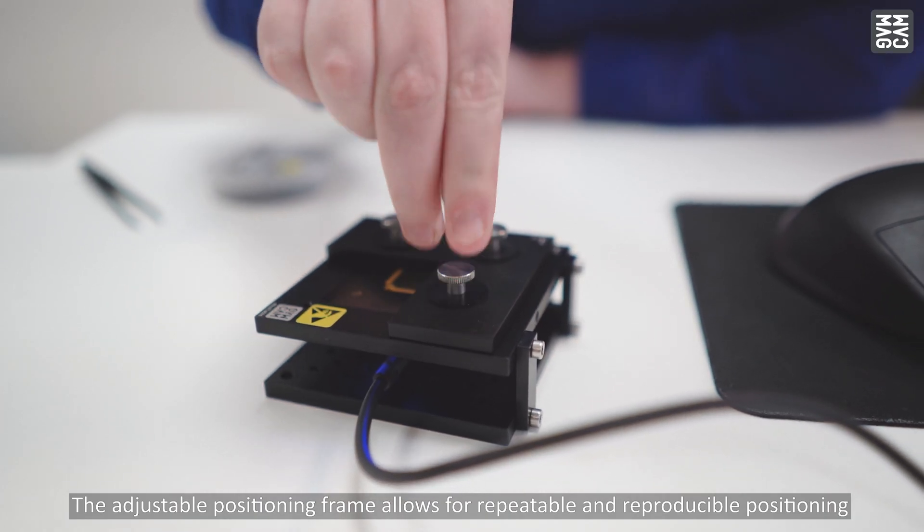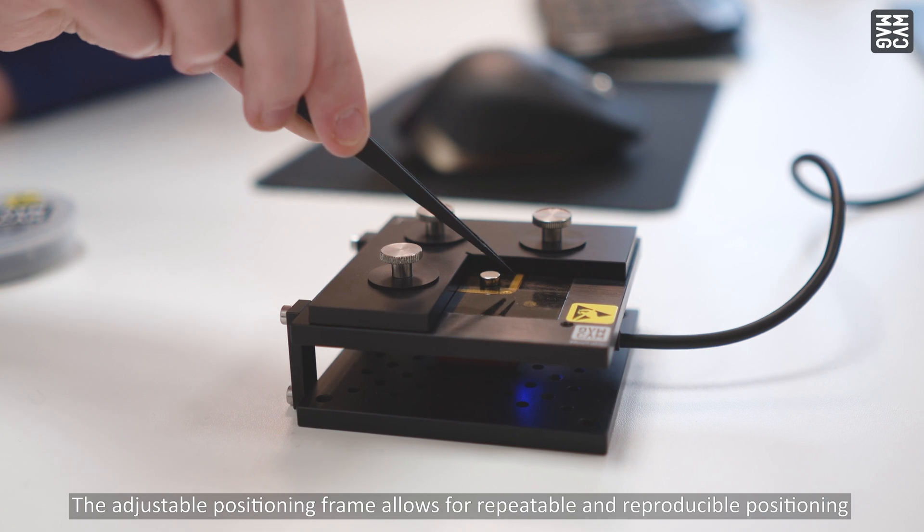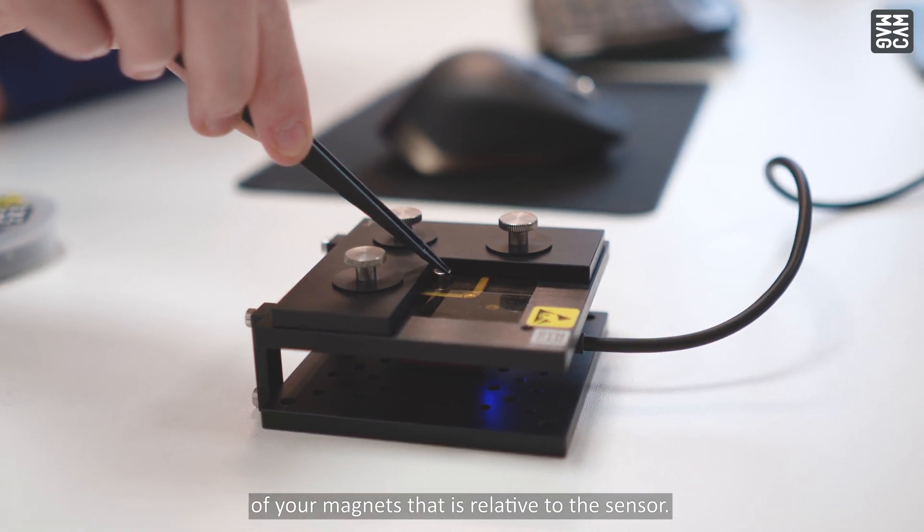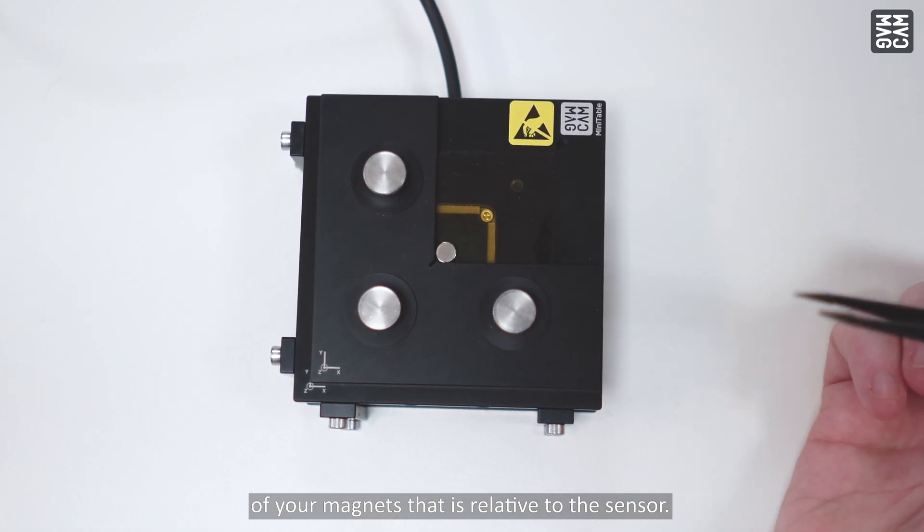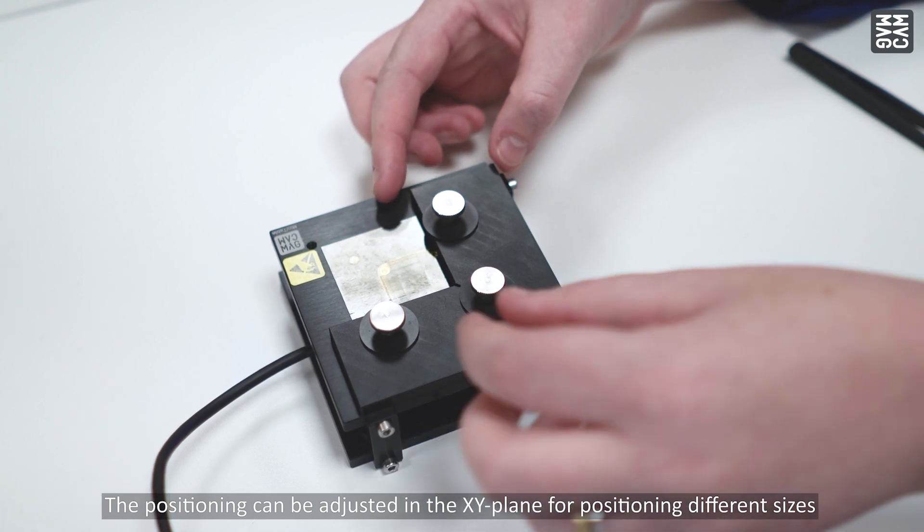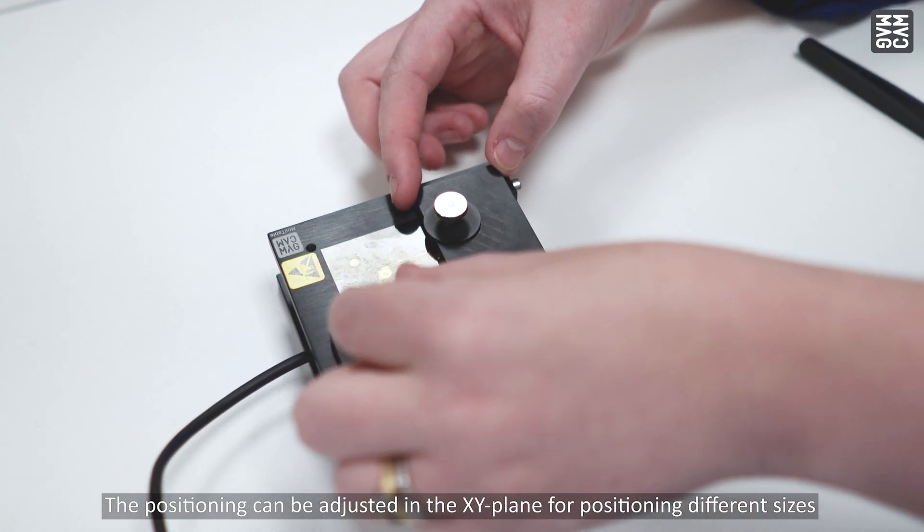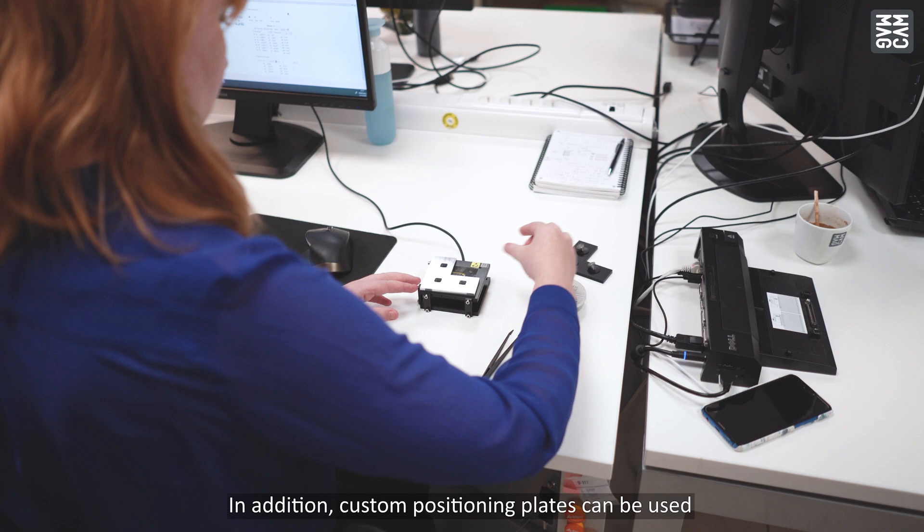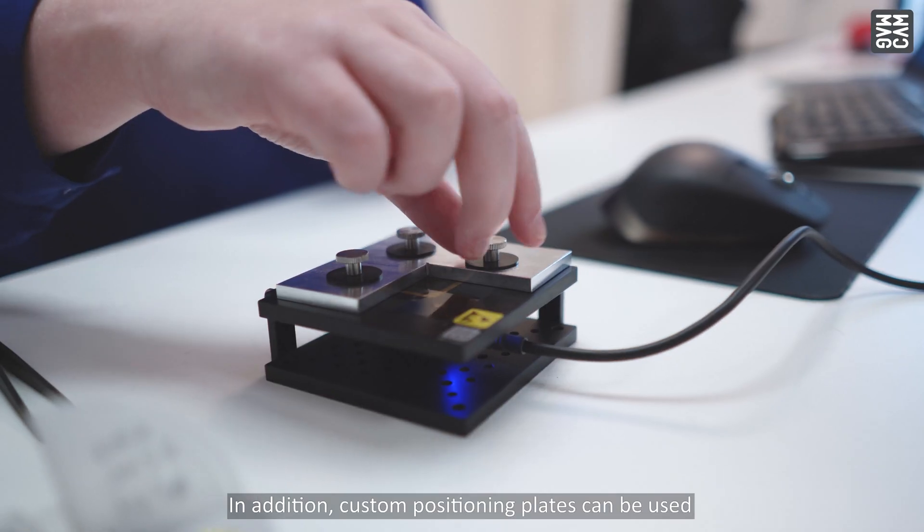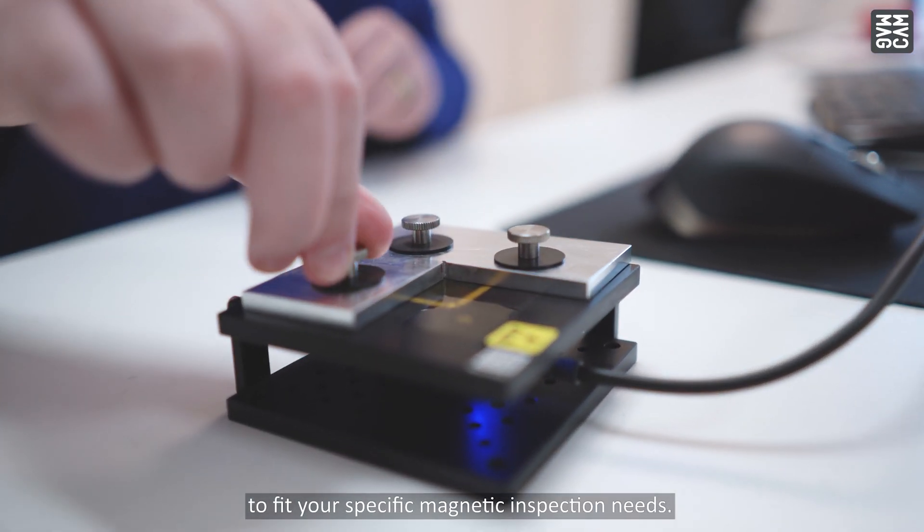The adjustable positioning frame allows for repeatable and reproducible positioning of your magnets relative to the sensor. The positioning can be adjusted in the XY plane for positioning different sizes. In addition, custom positioning plates can be used to fit your specific magnetic inspection needs.